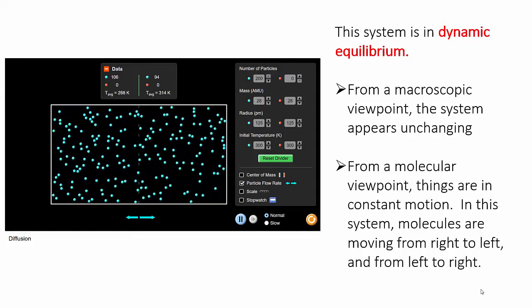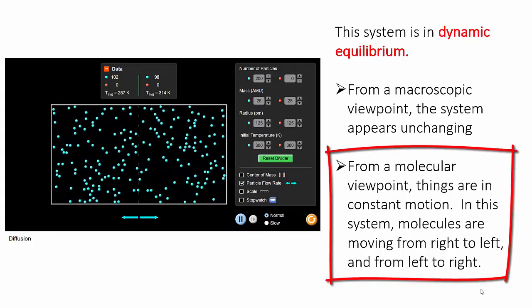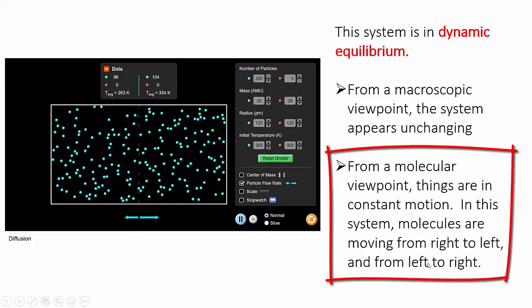So, on average things aren't changing. But the second key point is that if we look at the individual particles within the system, they're in constant motion, moving from one side to the other.